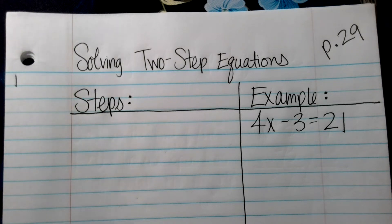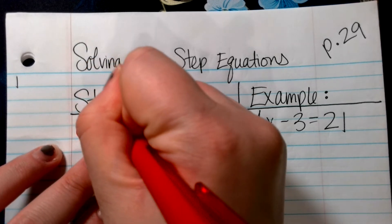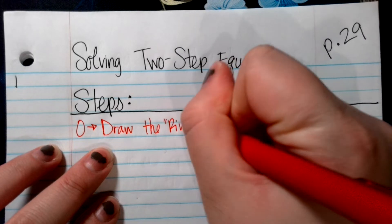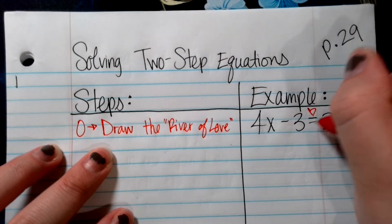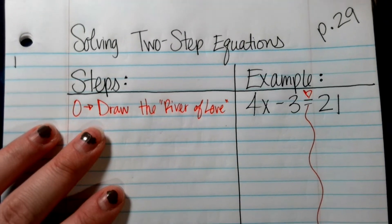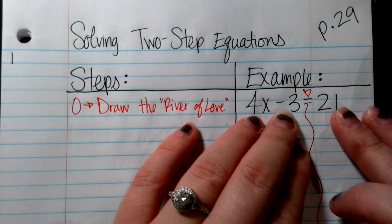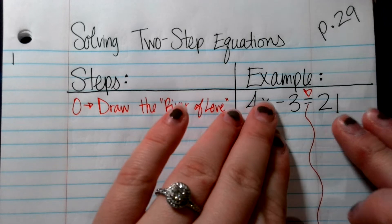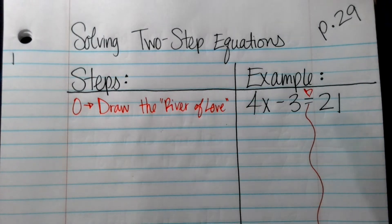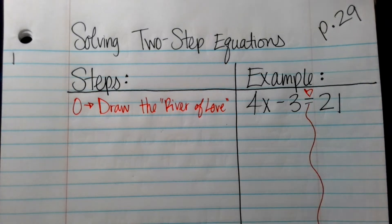In class the other day I talked about the 'river of love' in your notes and I told you I was going to explain what it meant. It's not really a step so I call it Step 0. Step 0 is to draw the river of love — it's just a little stream that runs along the equals sign. It reminds us to love both sides of our equation the same: whatever I do on one side, I need to do on the other. It doesn't help us solve the problem, but it does remind us to keep things balanced.